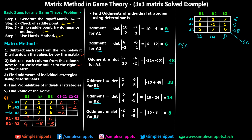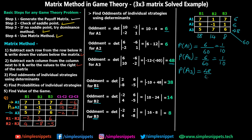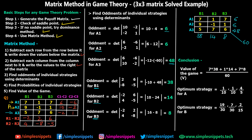The probability of A1 is oddment of A1 divided by the total: 6 divided by 60, which is 1/10. Similarly, P(A2) = 6/60 = 1/10. And P(A3) = 48/60 = 4/5. So the optimum strategy for player A is (1/10, 1/10, 4/5) for strategies A1, A2, and A3 respectively.